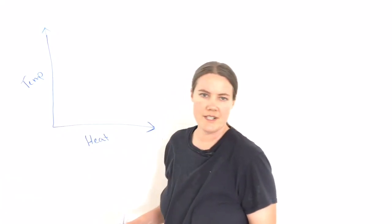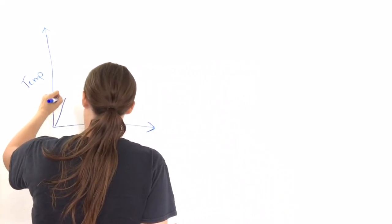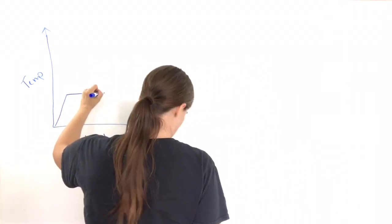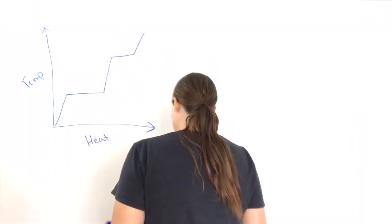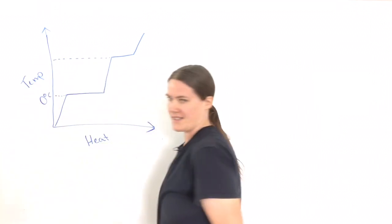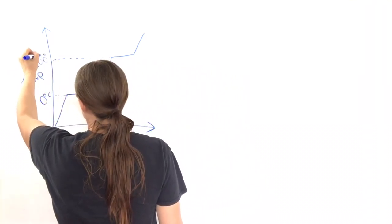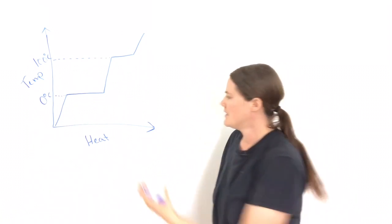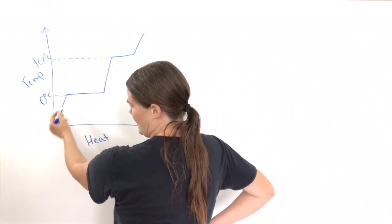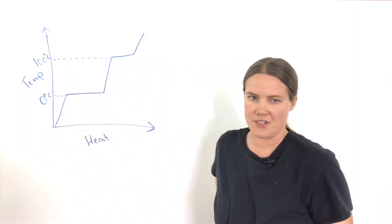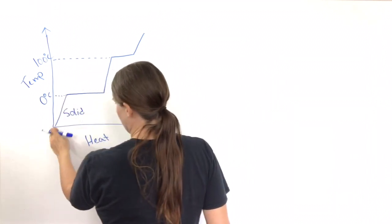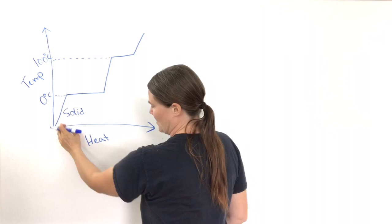Now let's draw what a heating or cooling curve would look like. Let's add some temperatures. This point right here is at zero degrees Celsius and this point right here is at 100 degrees Celsius. So, let's say we're looking at water — this would be a heating curve for water. If water is below zero degrees Celsius, it freezes at zero degrees Celsius, so right here, this is a solid.